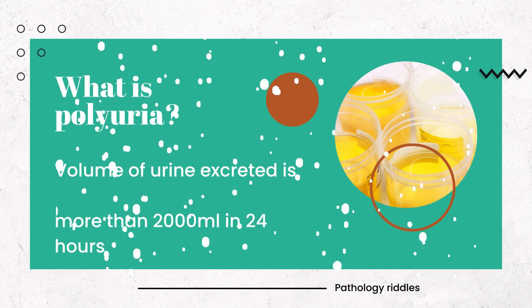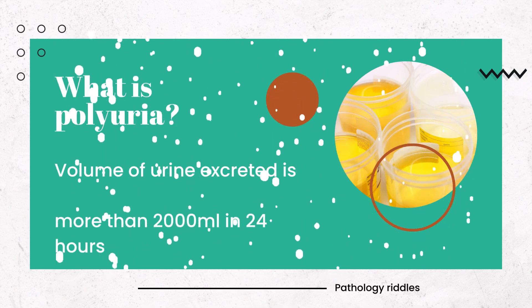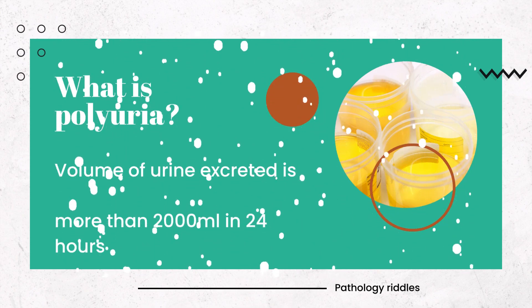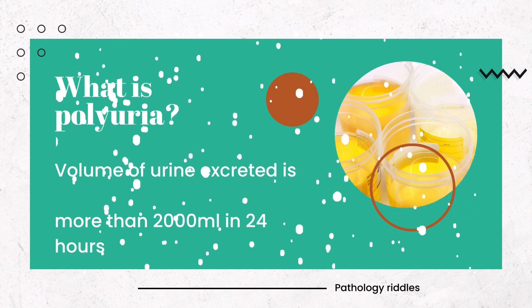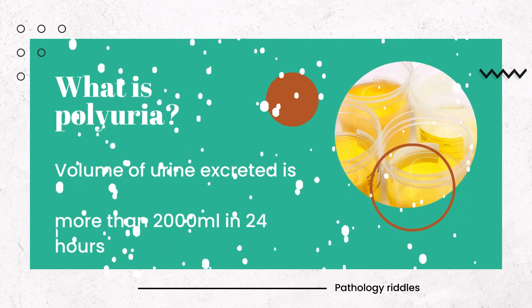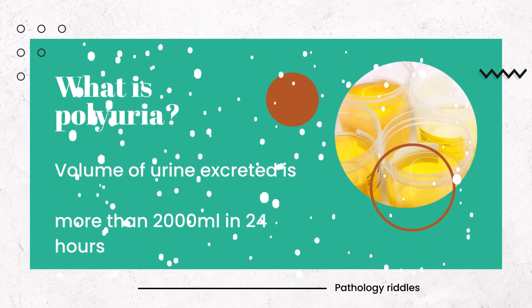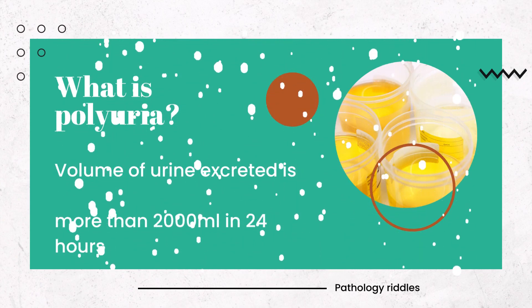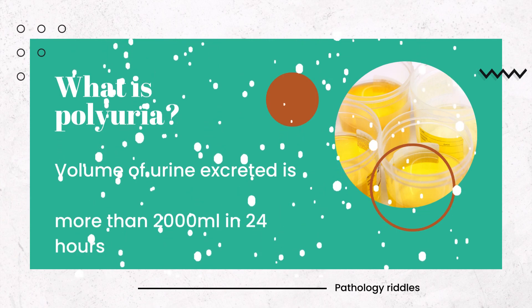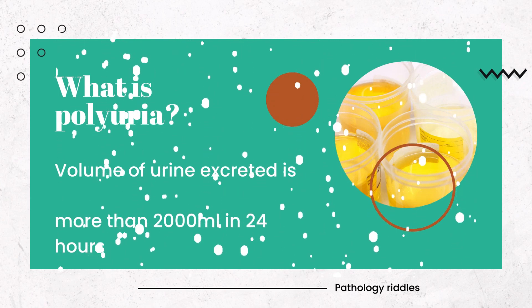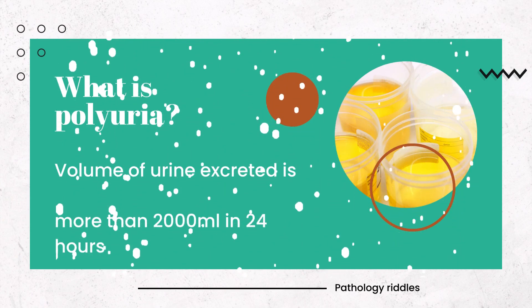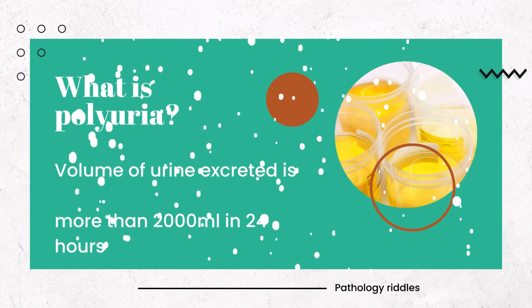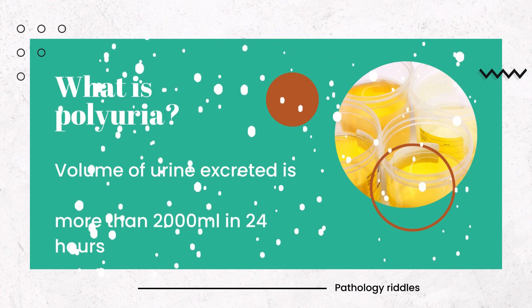What is polyuria? Basically, if the urine excreted in the previous 24 hours exceeds 2 litres or 2000 ml, this condition is called polyuria.